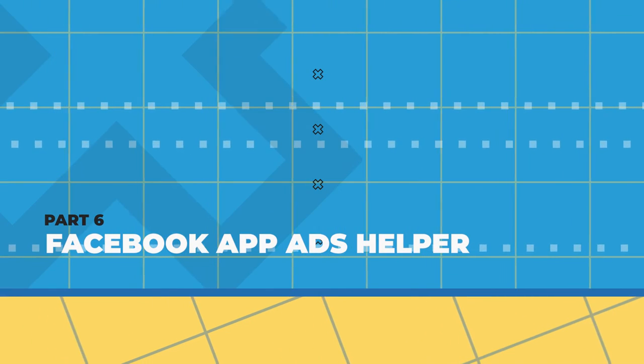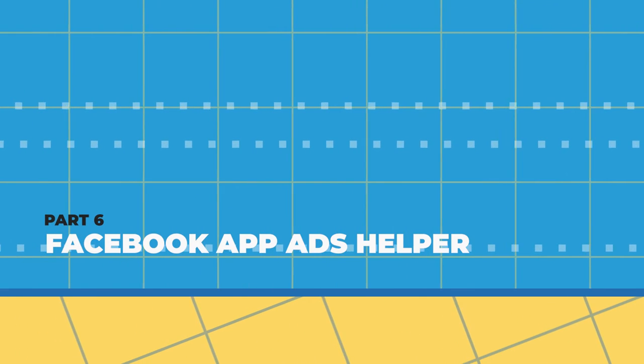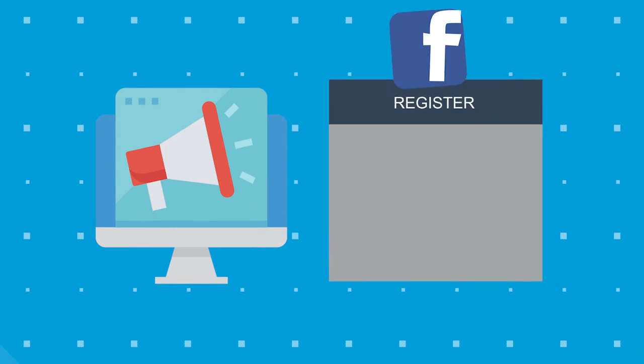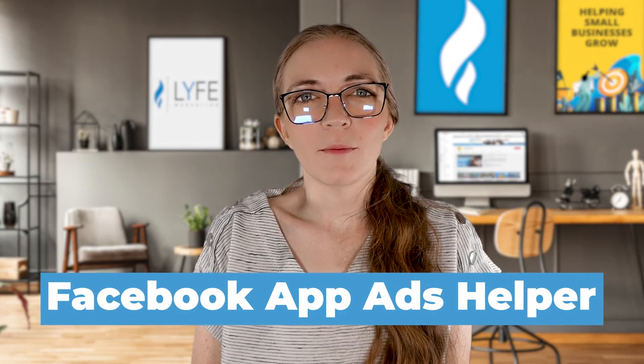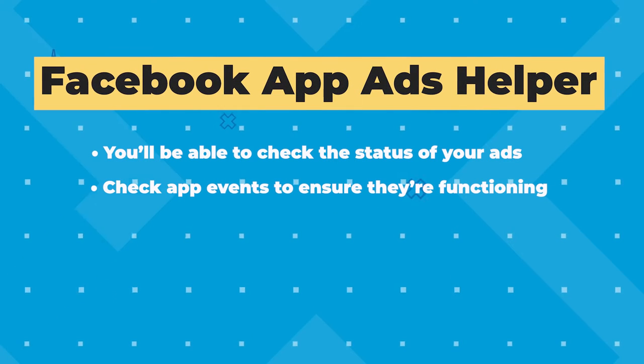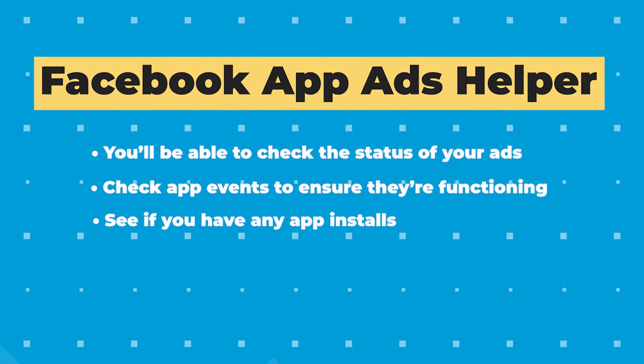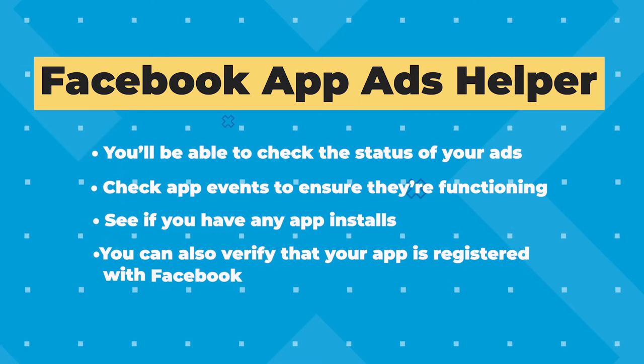There's a tool called the Facebook app ads helper that I'd like to introduce you to. Before you can run ads, you need to make sure that your app has been properly registered in Facebook. You'll need to visit the Facebook app ads helper, where you'll be able to check the status of your ads, check app events to ensure they're functioning, and see if you have any app installs. You can also verify that your app is registered with Facebook. If the app ads helper shows that your app is registered and available for use, you're ready to start running app ads.